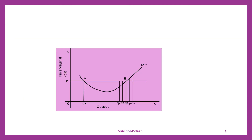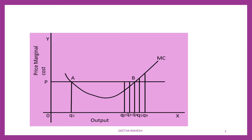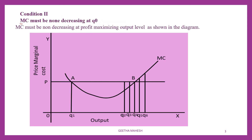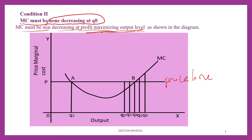Now let us discuss the second condition with the help of a diagram. The second condition is: MC must be non-decreasing at Q0, that is, MC must be non-decreasing at the profit maximizing output level. We can see this horizontal line — we call it the price line. From the first condition, price must be equal to MC. At points A and B in the diagram, price is equal to MC. So we have two quantities: at Q1 and at Q4, price equals MC.